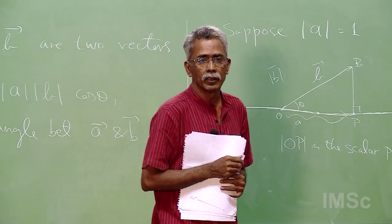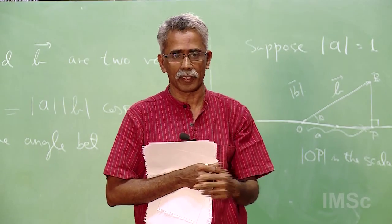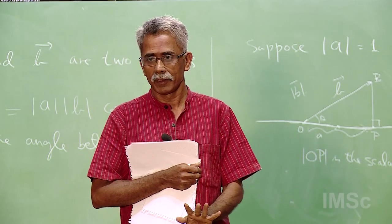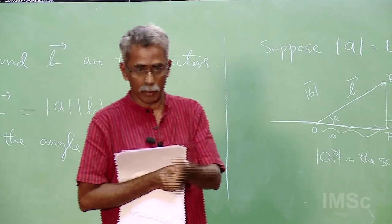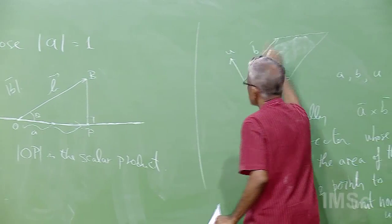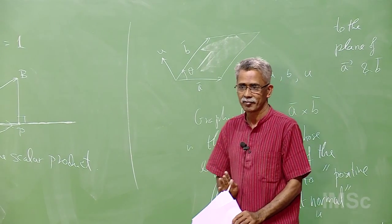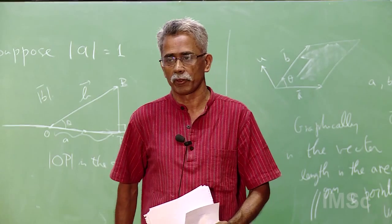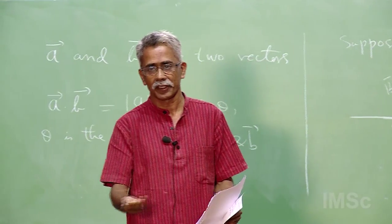Here for the cross product, why do you want sin θ? We would like i cross j to equal k, and the magnitude should be 1. If A is i and B is j, the angle between them is 90 degrees. If you put cos 90, you get 0. You have to have sin θ. This is just the rationale — you have to go back to the definition and then it is clear.